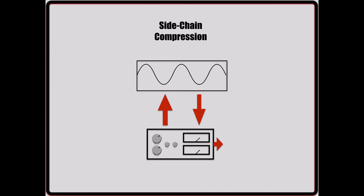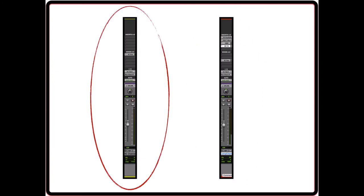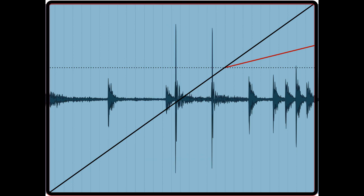Alright, so the last compression technique that I want to talk about in this video is sidechain compression. Just like parallel compression, this technique involves two different channels. We're going to call these channels the compression channel and the sidechain channel. Now you should understand that compression works by monitoring a signal level, and when that signal level passes a certain point, it begins to compress the signal according to the parameters set.